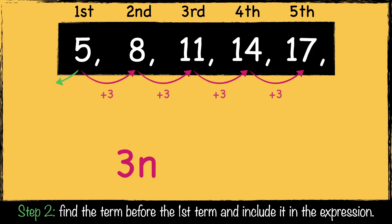Now we need to find the term that comes before the first term. As this sequence is adding 3 each time, we need to subtract 3 to find the previous term. So 5 take away 3 is 2. Because the previous term is 2, we're going to add 2 to the expression.